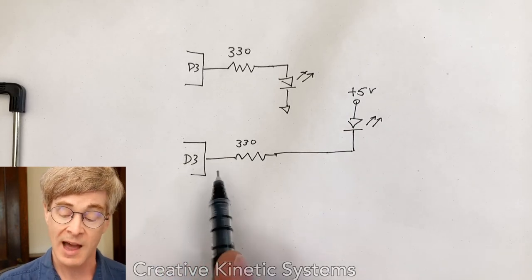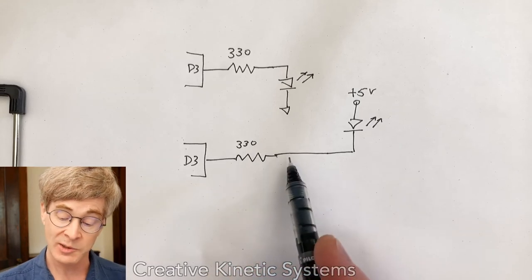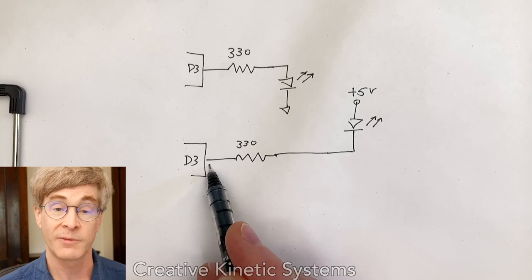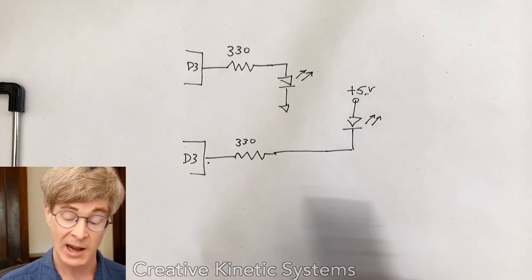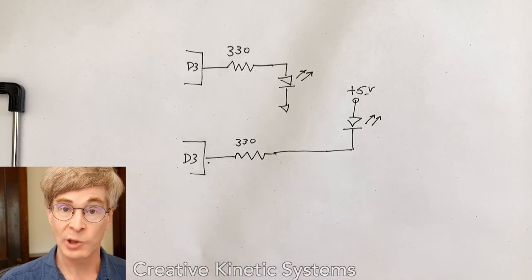When the D3 output is in the high state, the LED is off. Basically, there will be no current because at one end of the circuit is 5 volts, at the other end is 5 volts, and no current will flow between them. Now when we drive the D3 output to a low voltage,